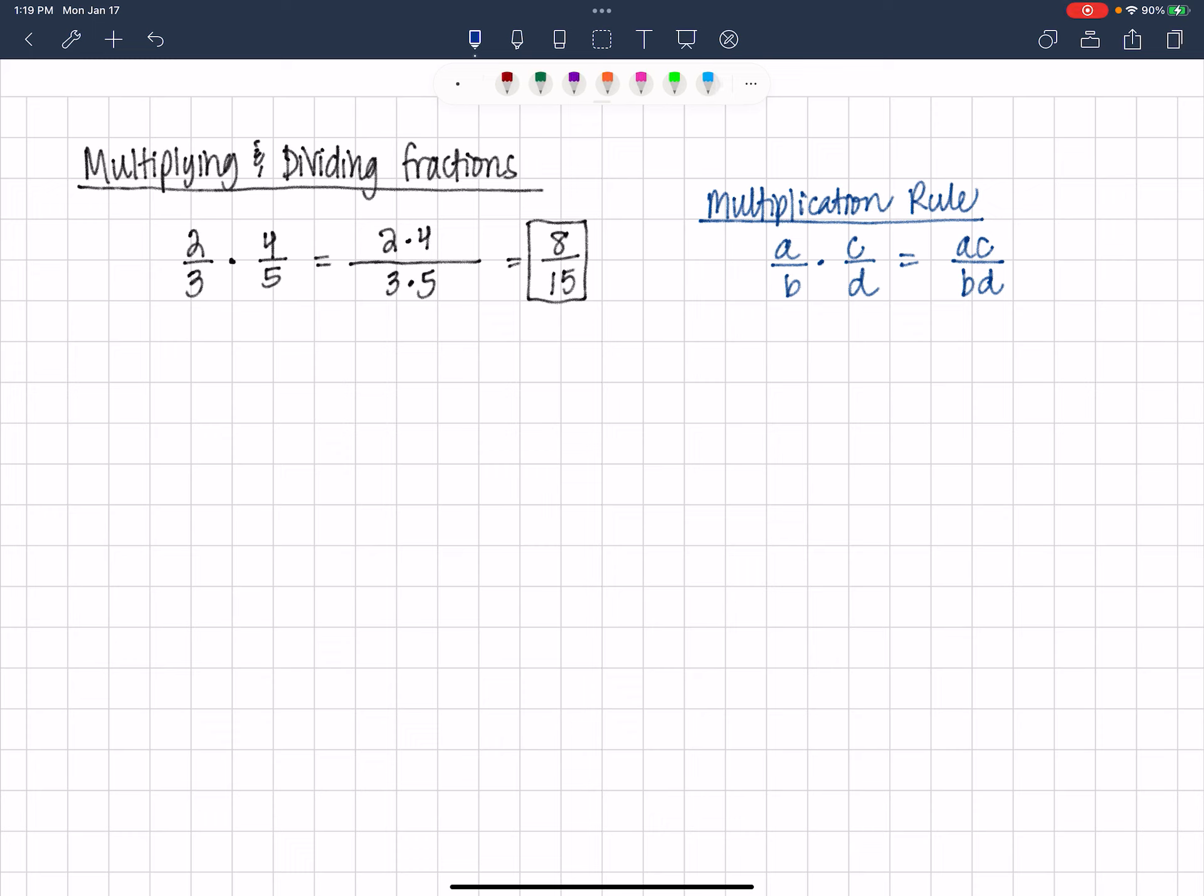Division, if we wanted to divide 2 thirds divided by 4 fifths, we must first change division to multiplication.